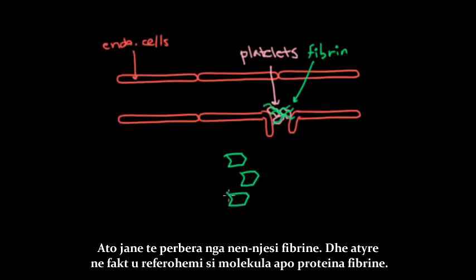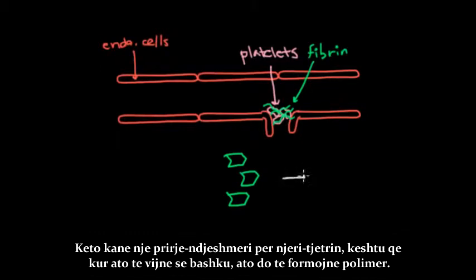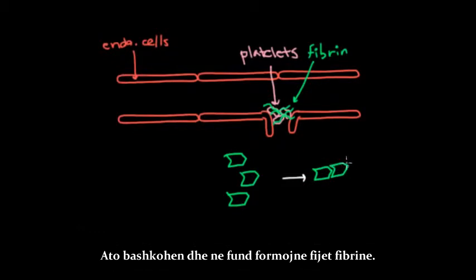So what do these fibrin strands look like? Well, they're made up of little fibrin subunits. And these are actually what we refer to as the fibrin molecules or proteins. And these, it turns out, have a natural affinity for each other. So that when you bring them together, they form a polymer. They join end to end and they create a fibrin strand.